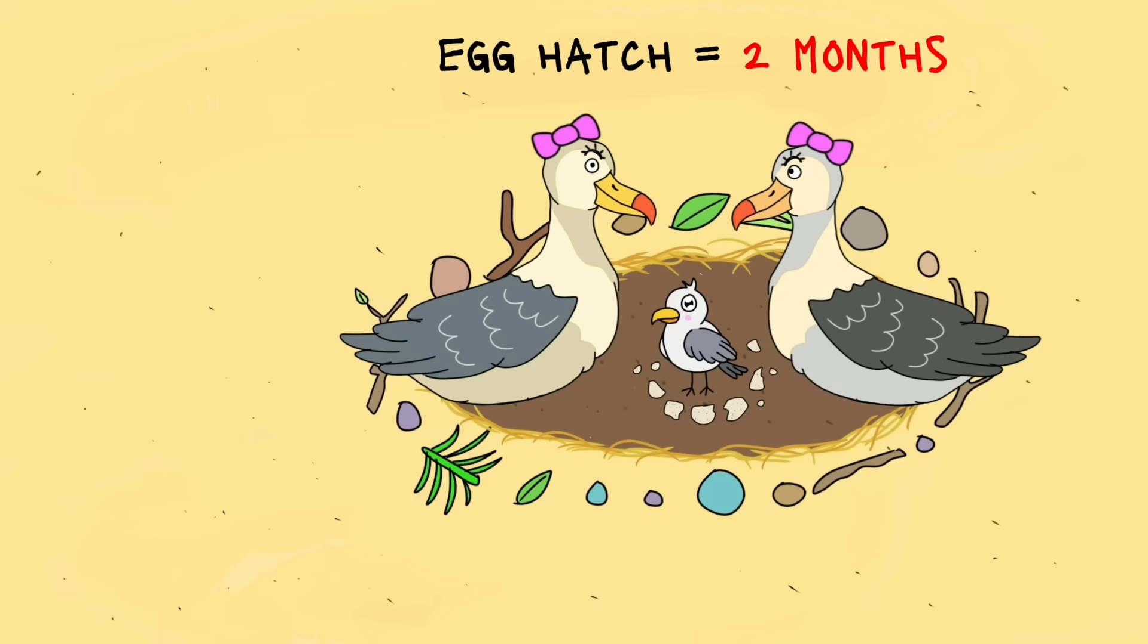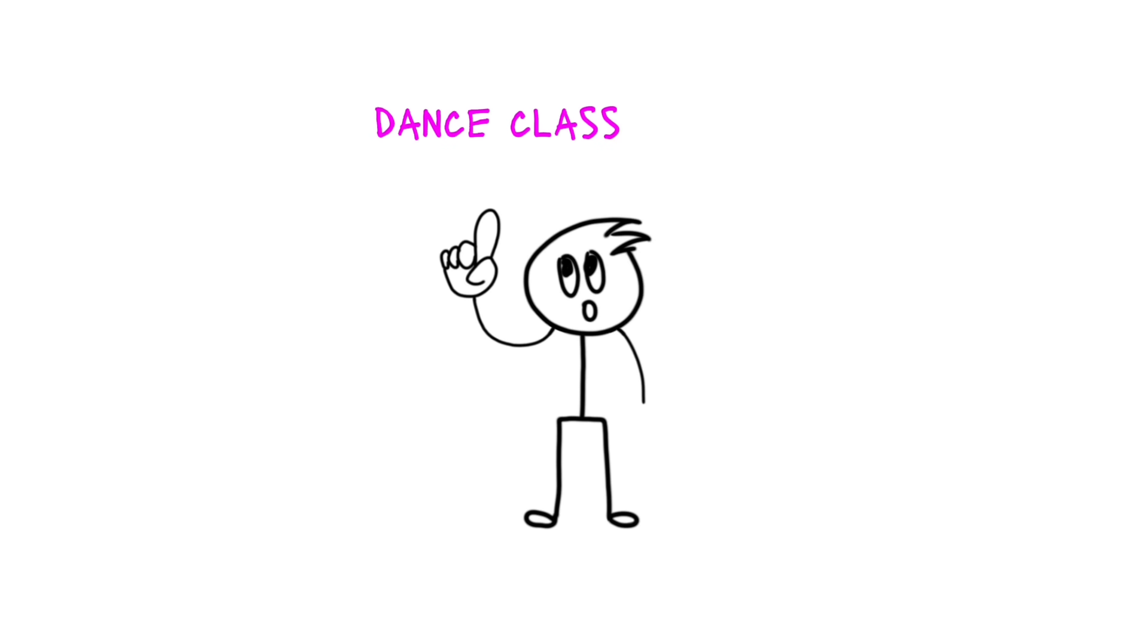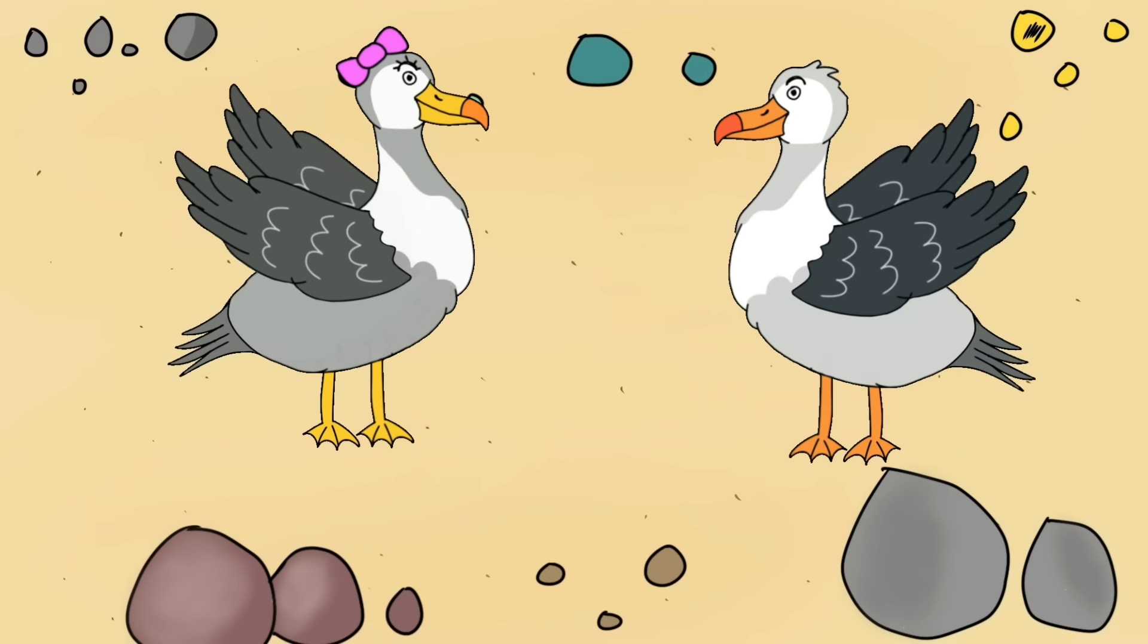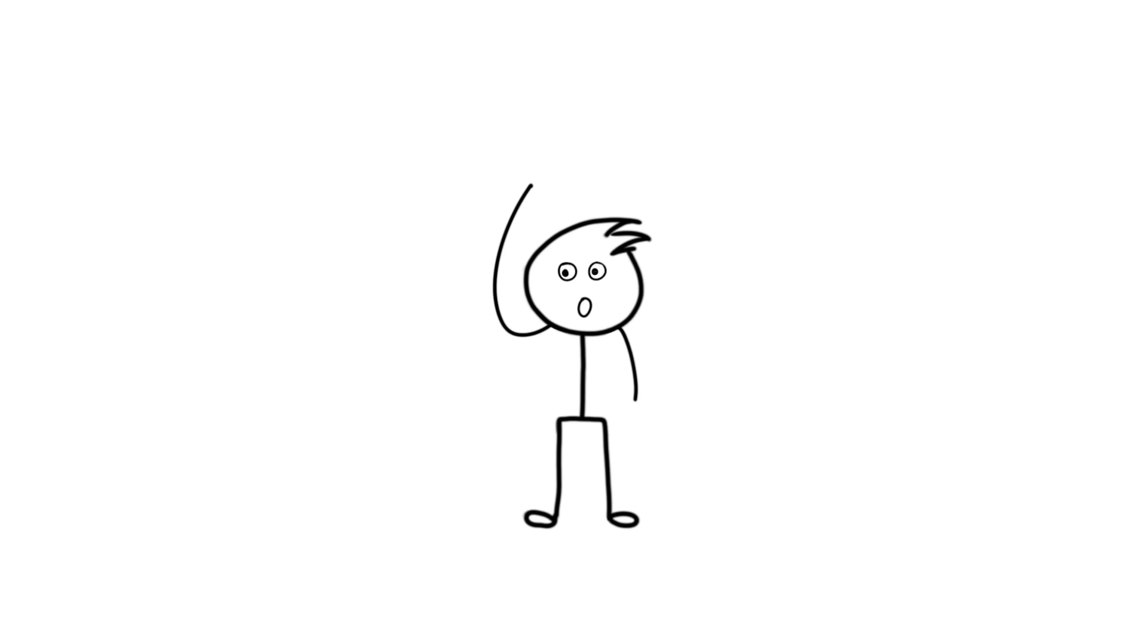The egg will hatch in around two months, and they will raise it for a few more months. Then kids join the dance class for around ten years, and then show the moves to newly found chicks. Well, the cycle continues.